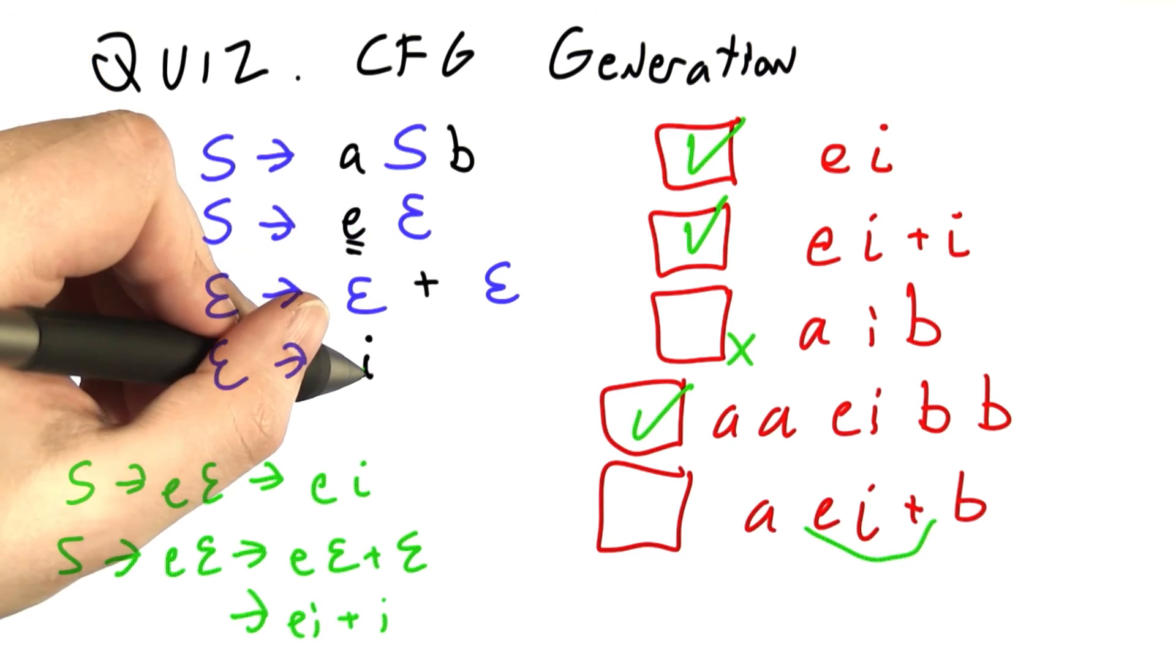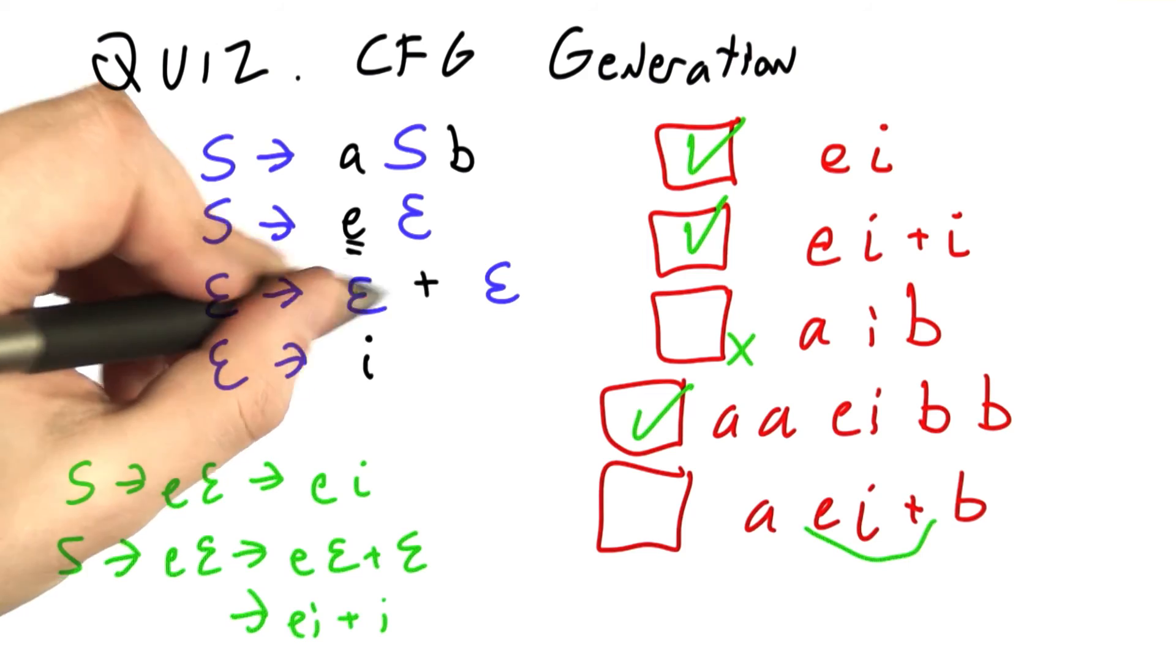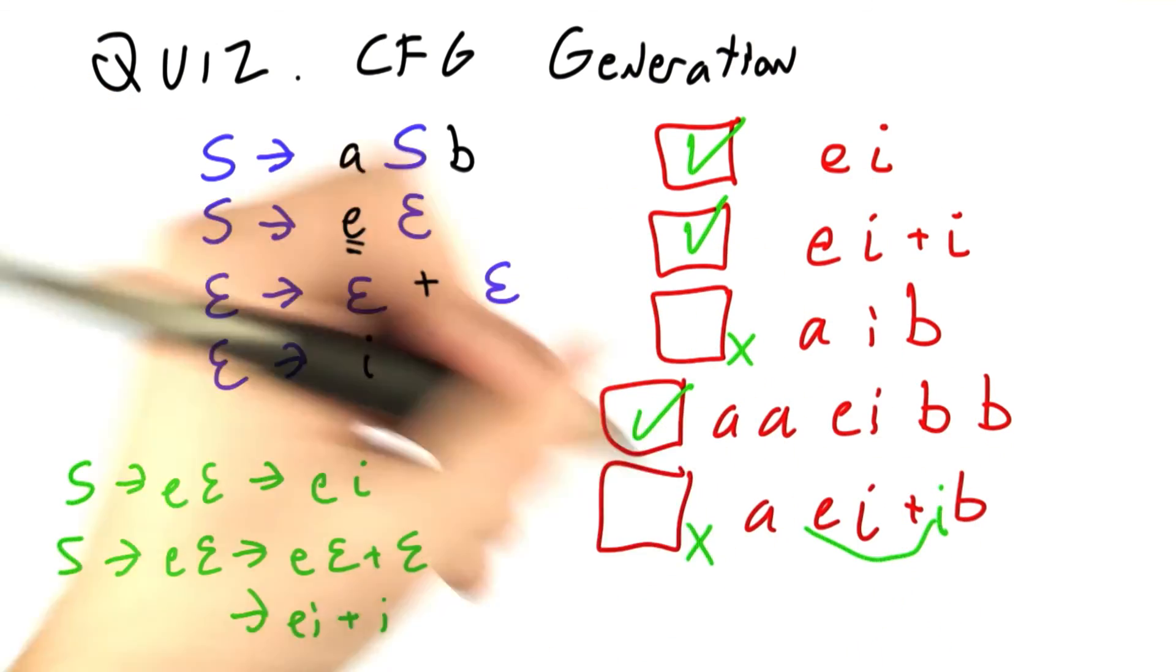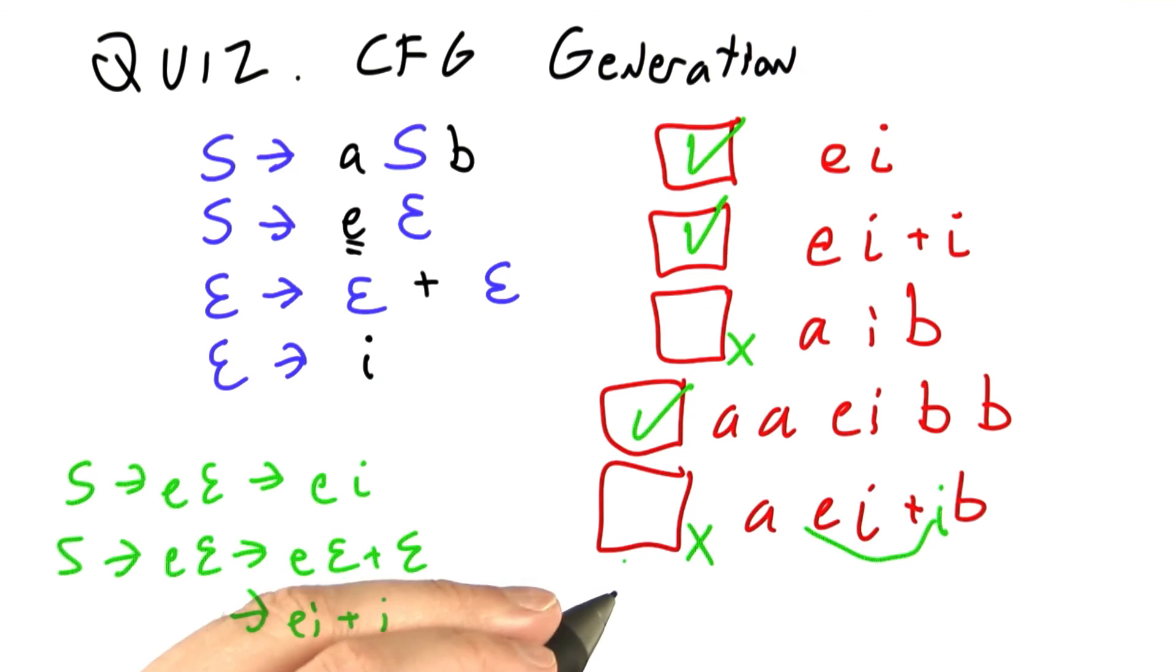We can get the E and the I, but if we use the plus rule it has to have an E on both sides. We really need another I in here, but we don't have it, so this string is not in the language of the grammar.